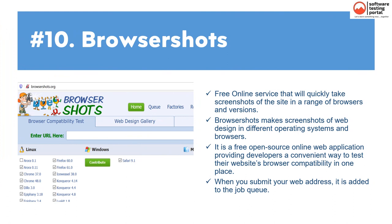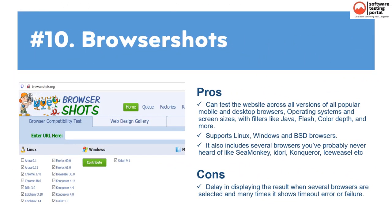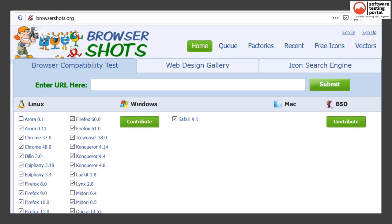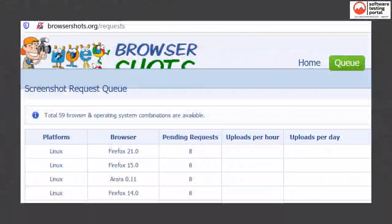The tenth tool is Browsershots. It's a free online service that quickly takes screenshots of a site in a range of browsers and versions. It is a free, open-source web application providing developers a convenient way to test browser compatibility in one place. Pros: tests across all versions of popular mobile and desktop browsers, OS, and screen sizes with filters like Java, Flash, color depth, and more; supports Linux, Windows, and BSD browsers including obscure ones. Cons: delay in displaying results when many browsers are selected, and frequent timeout errors. This is the dashboard of Browsershots where you start tests after selecting browsers. This is the queue where screenshot requests are stored with status shown.